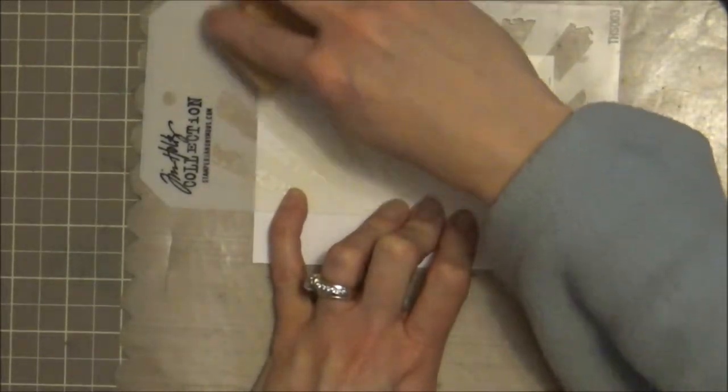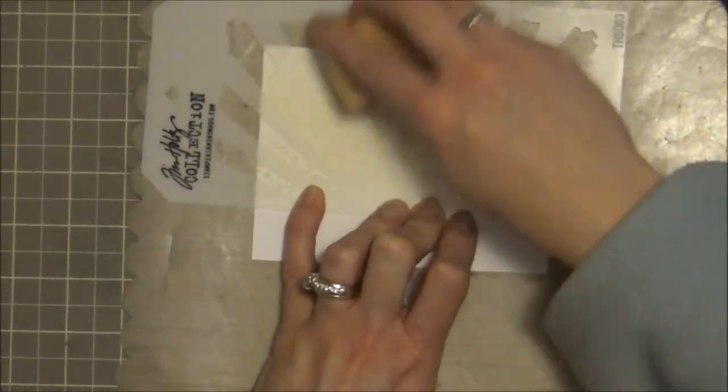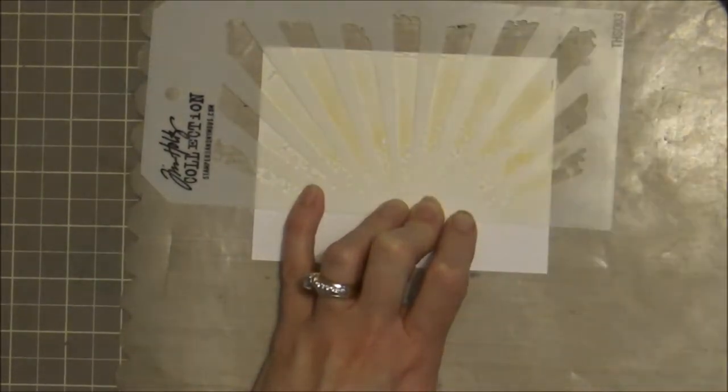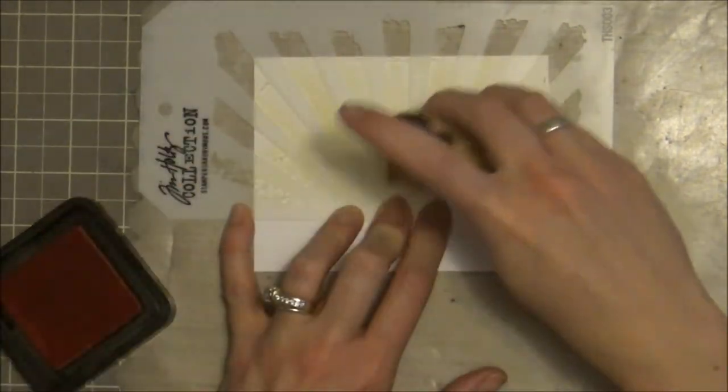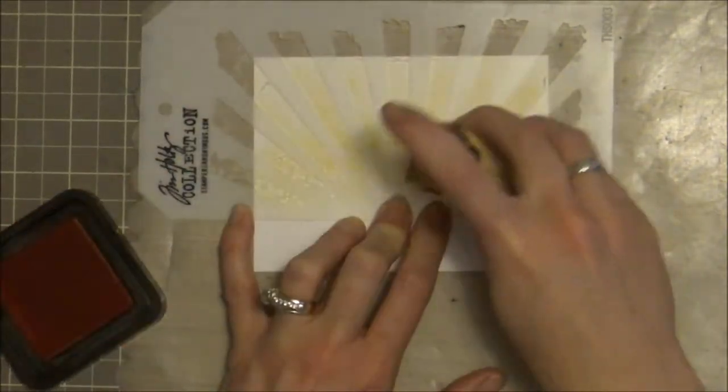So I'm just kind of more using what I would say is a pouncing motion just to add the color, and it does take a little longer to build up the color that way, but then I'm not ruining my awesome stencil. Once I've got that scattered straw down, I'm going to come back in with a little bit of spiced marmalade near the base of the rays.